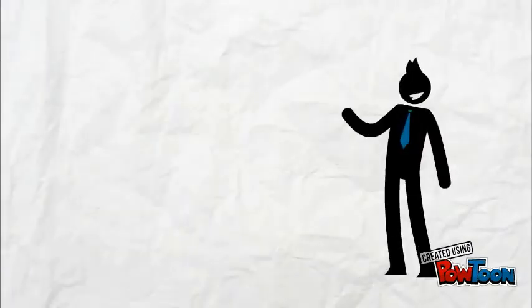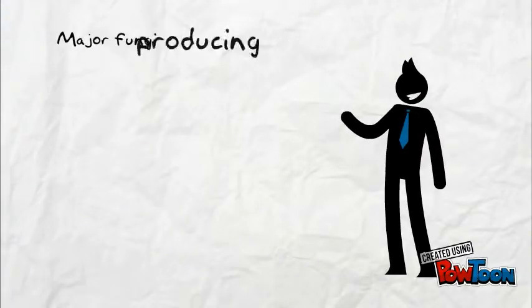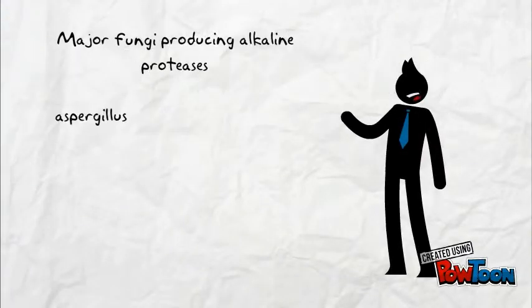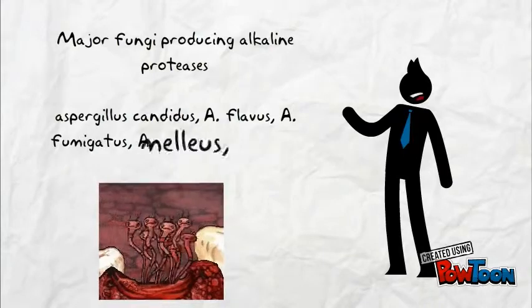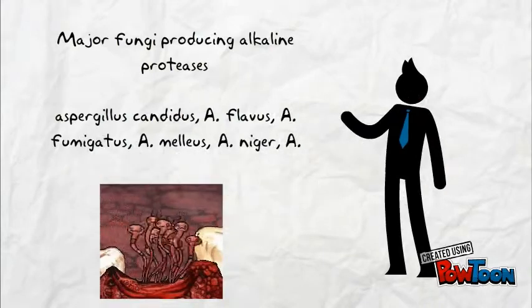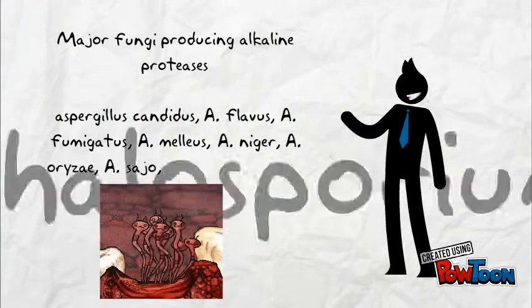Major fungi producing alkaline proteases include Aspergillus candidis, Aspergillus niger, Aspergillus oryzae, and many more as shown in this slide.